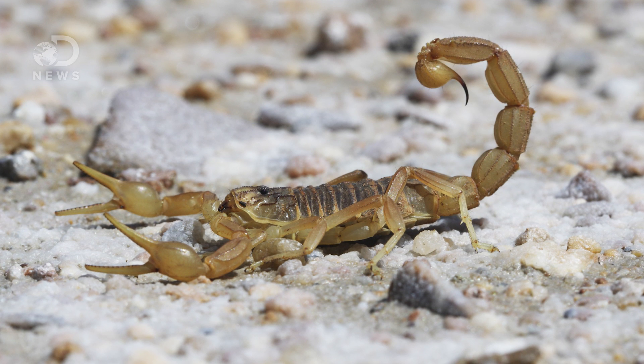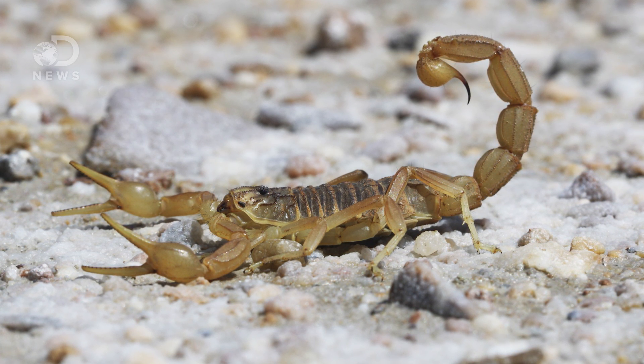For example, although all 2,000-ish species of scorpion carry venom, only about 30 or 40 of them have venom strong enough to kill a person.